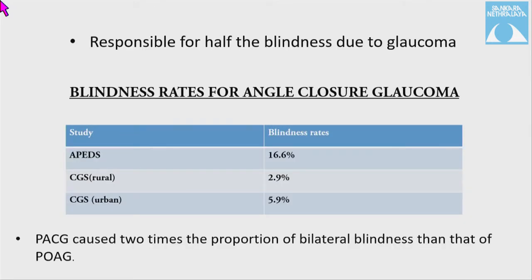Primary angle closure glaucoma is responsible for half of the blindness due to glaucoma. The blindness rate varies by study: 16.6% per the Andhra Pradesh eye disease study; 2.9% rural and 5.9% urban per the Chennai glaucoma study.